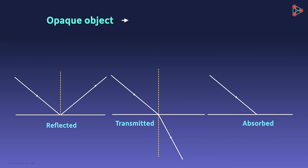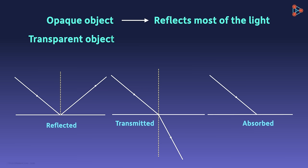If an object is opaque, then it will absorb and or reflect most of the light back. If it is transparent, more light will be transmitted.